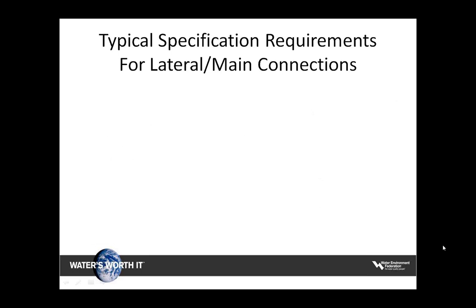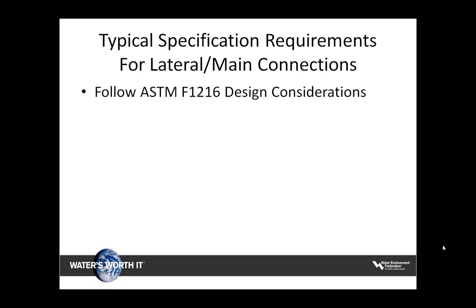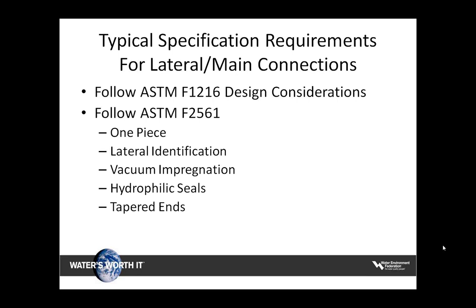Typical specification requirements for lateral-to-main connection liners are similar to mainline in that they should follow the design standards of ASTM F1216 and additionally ASTM F2561. This includes a one-piece liner with no joints, house address and liner and resin information located under the coating near the house tap — known as lateral indicia — vacuum impregnation of the resin into the liner, hydrophilic seals to act as a watertight gasket, tapered ends for smooth flow transitions, and no pressure interruption to ensure the host pipe cannot collapse onto the liner during curing.